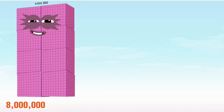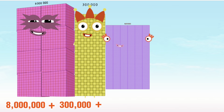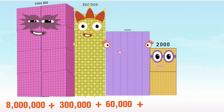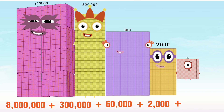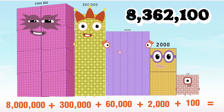8 million plus 300,000 plus 60,000 plus 2,000 plus 100 is equal to 8,362,100.